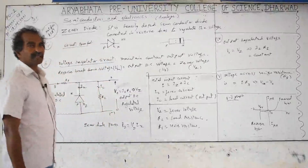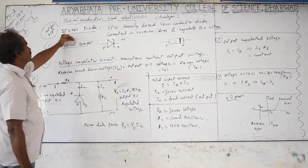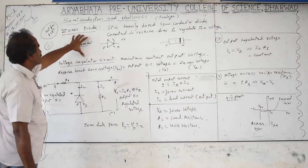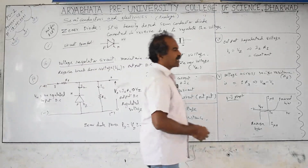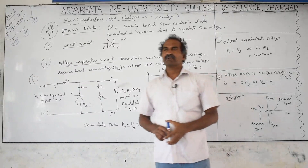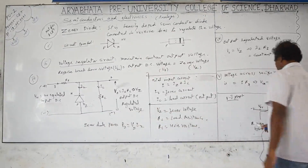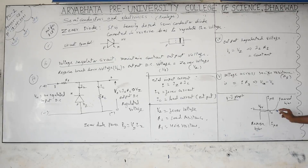In semiconductor electronics, the next type of diode we are going to discuss is called a Zener diode — Zener is the name of a scientist. Previously we discussed the ordinary diode: in forward bias, after crossing the barrier potential of 0.3 volts or 0.7 volts, the current increases, but in reverse bias the diode does not conduct current.